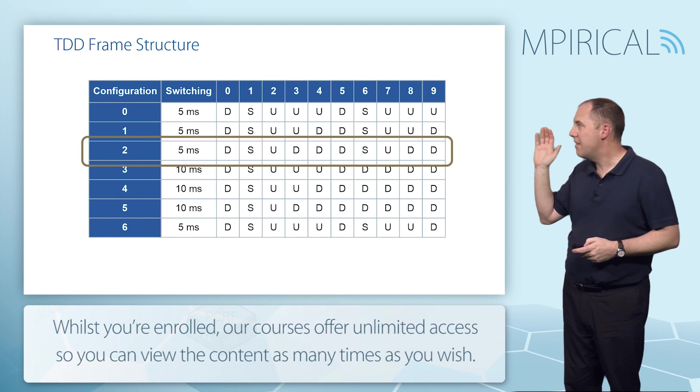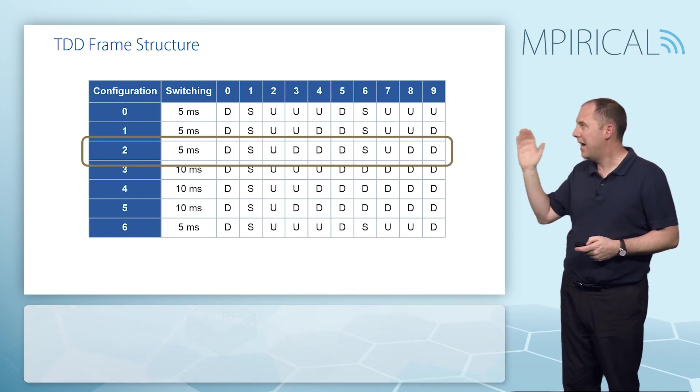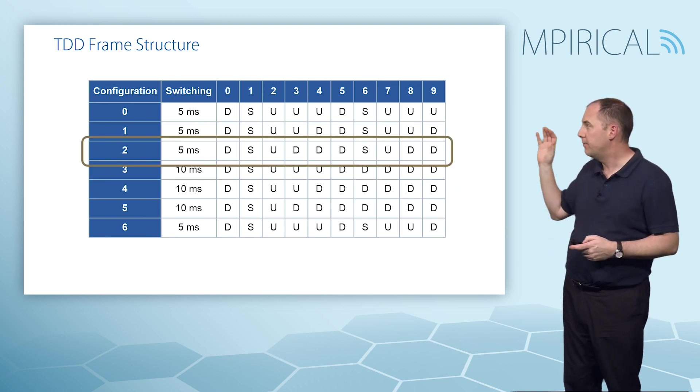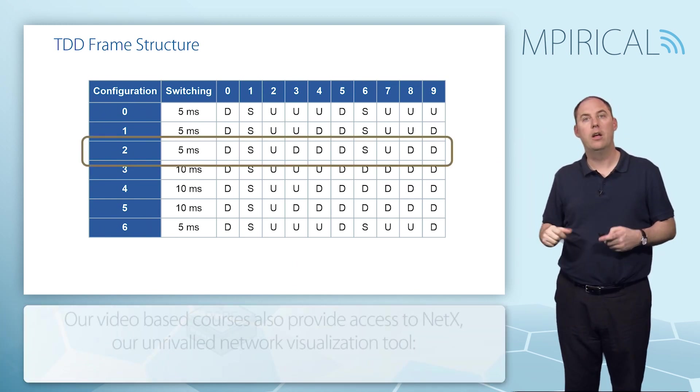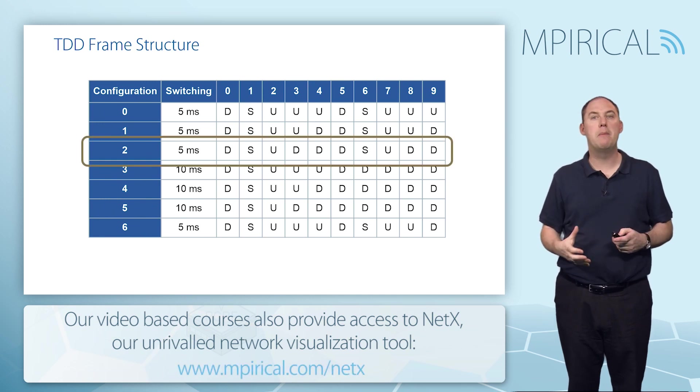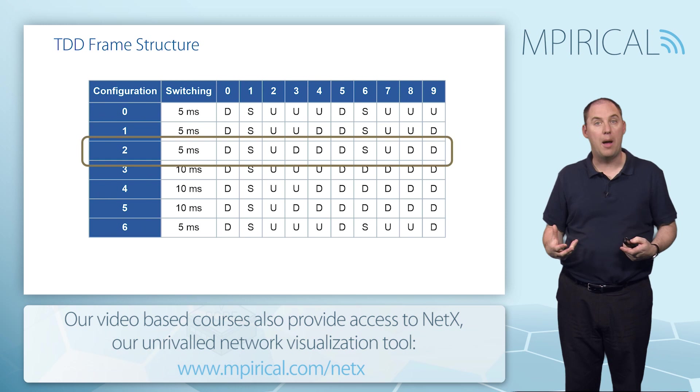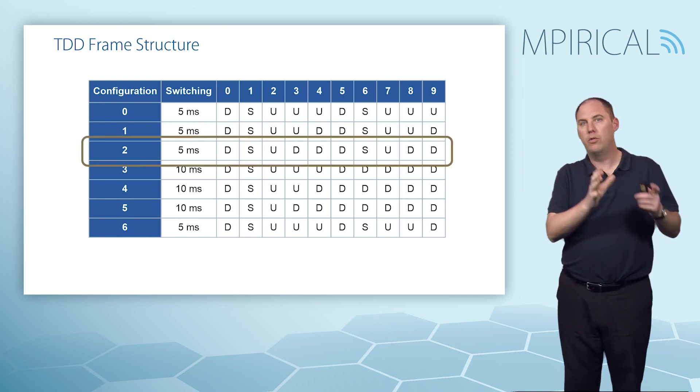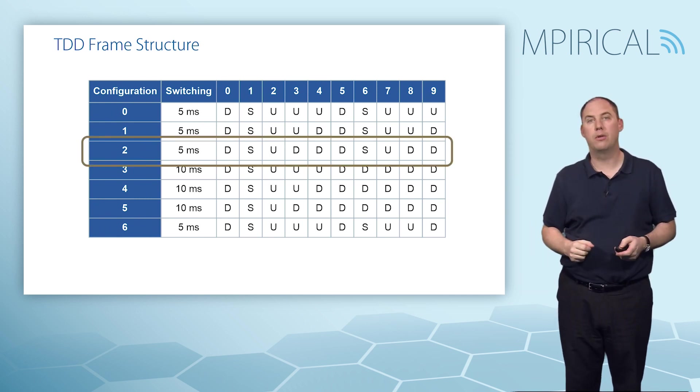You can see that particular configuration goes down, a special frame, up, then there's three more downs, a special frame, up, and two more downs. The idea is we need a special frame when we go from down to up, and that's to do with something called timing advance to mitigate interference. If you go from up to down, we don't need a special frame.